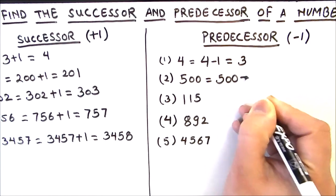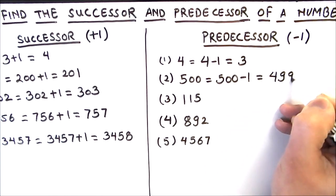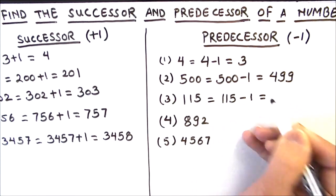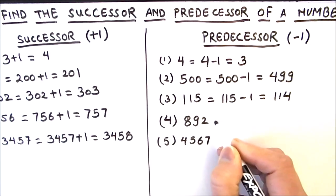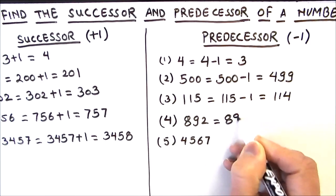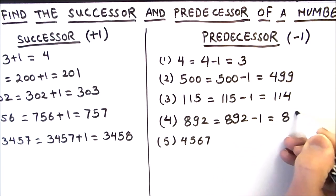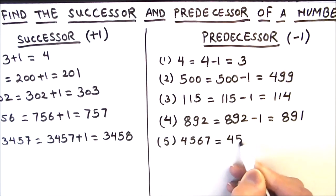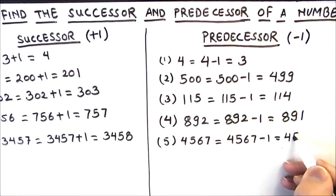Next we have 115, and predecessor of 115 is 114. Next is 892, and predecessor of 892 is 891.